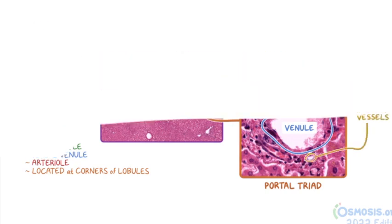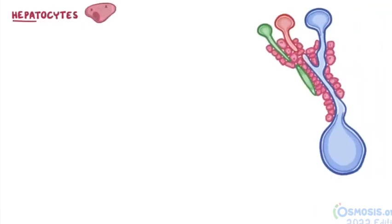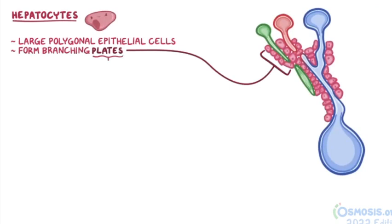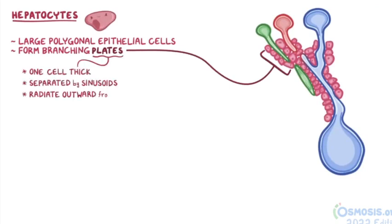Let's take a closer look at the hepatocytes, which are large polygonal epithelial cells that form branching plates that are only one cell thick, separated by sinusoids, and radiate outward from the central vein. The sinusoids carry blood from the hepatic arteriole and portal venule to the central vein, while the bile canaliculi or capillaries carry the bile produced by hepatocytes in the opposite direction in order to drain into the bile ductules.